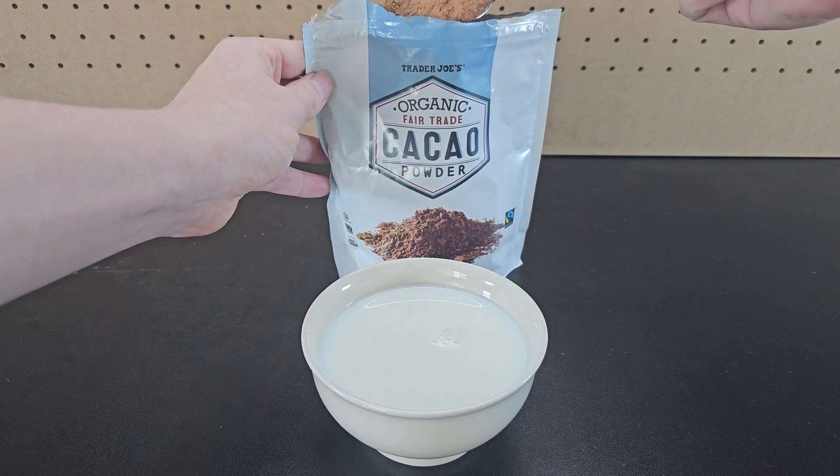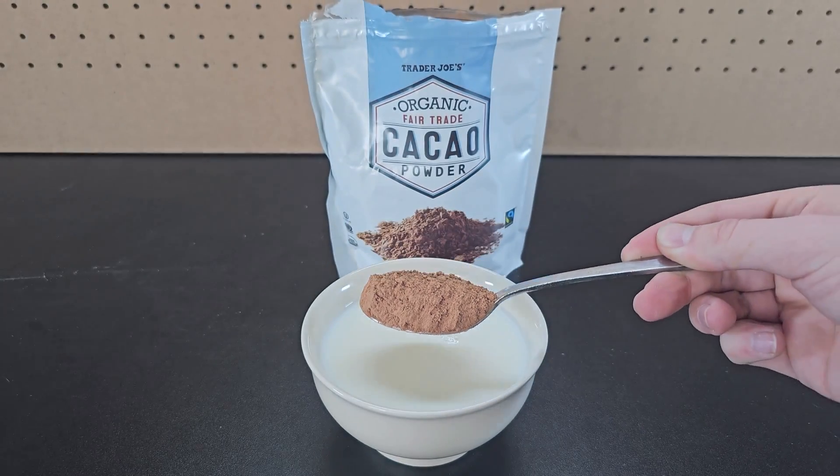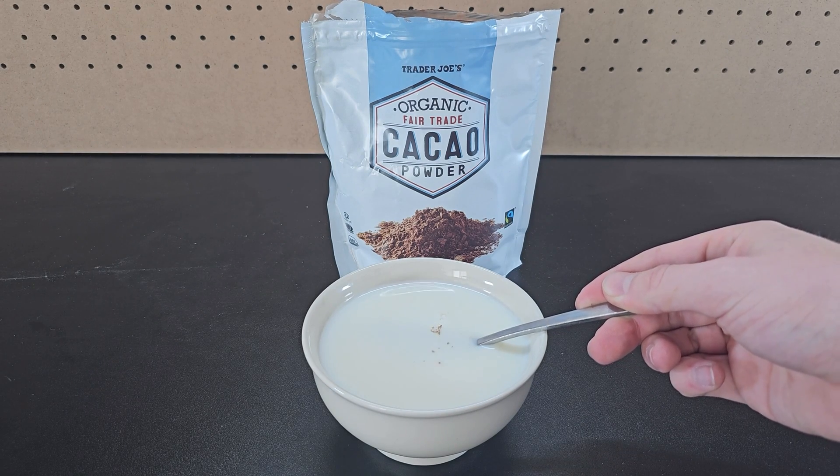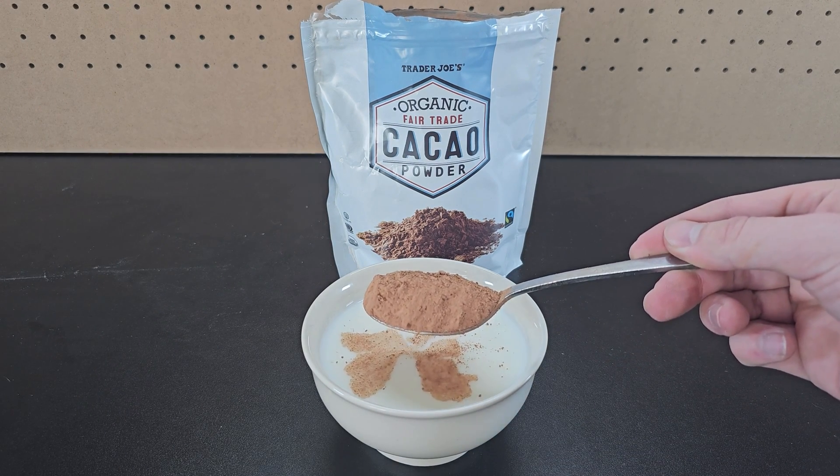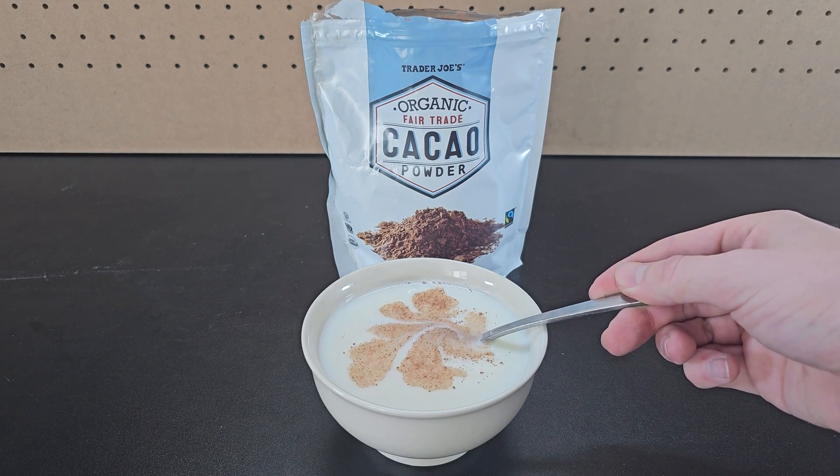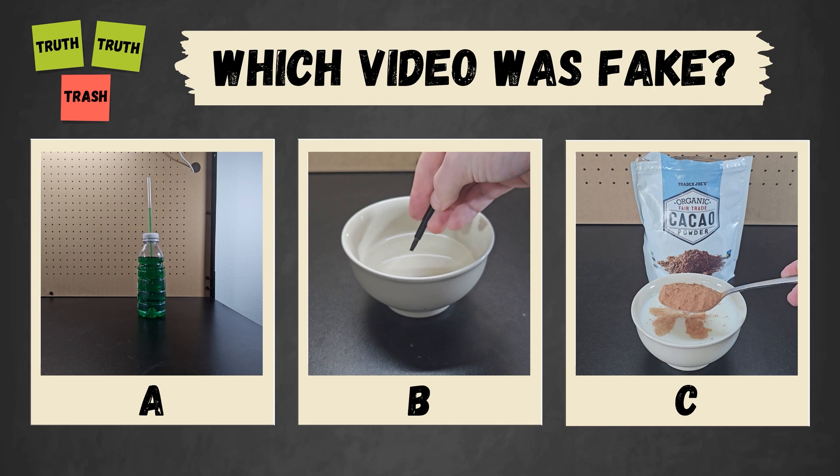First, pour some milk into a bowl. Then grab a scoop of cacao powder and dip it in the milk. You might expect the powder to be wet now, but when you take the spoon out, the powder underneath the surface remains completely dry. You've seen all three videos now, pause to vote in the comments which one you thought was fake.